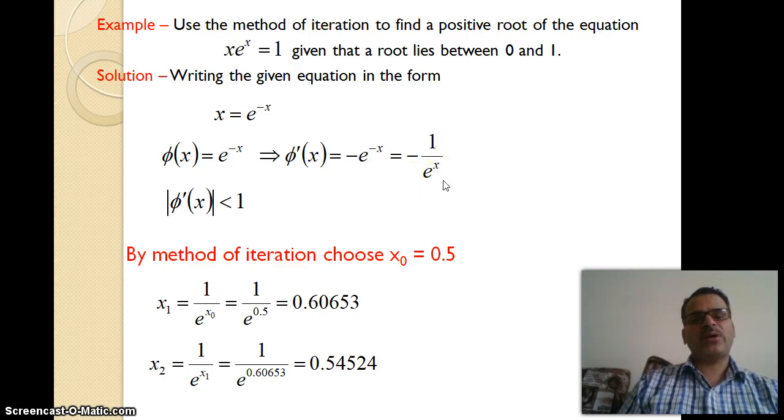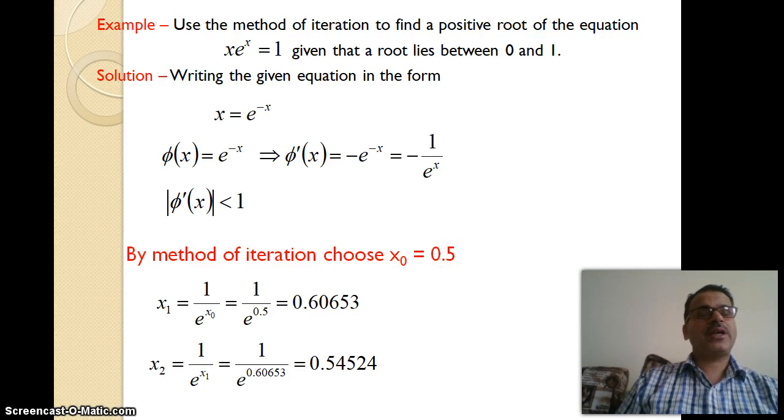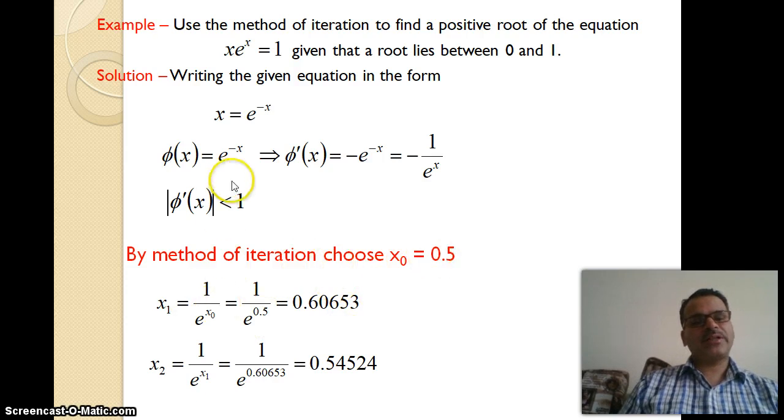If you put x = 0, 1, 2, 3, 4, the value is less than 1. By the method of iteration, we will select initial value 0.5 because the question states the root lies between 0 and 1. We assume this value here.